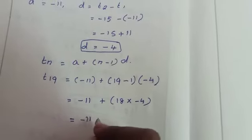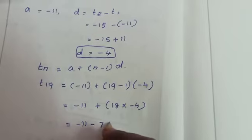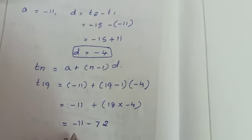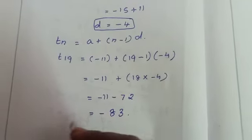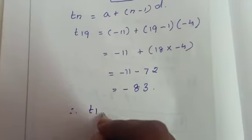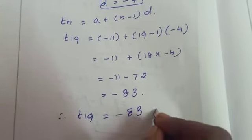Which is equal to -11, 18 into -4, -72. Now add -11 minus 72 is -83. Therefore, our 19th term equal to -83. That's all.